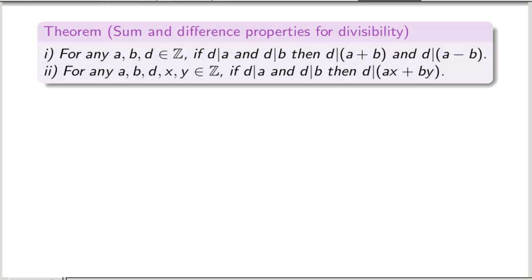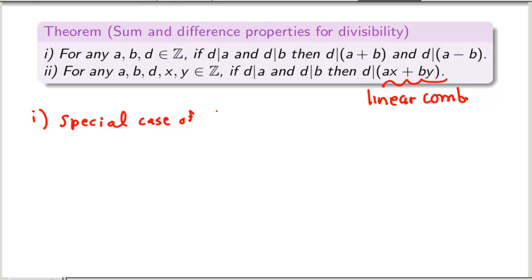Some basic properties of divisibility. The first one is that if d is a common factor of both a and b, then it's a factor of their sum and difference. And this can be generalized to say that d is in fact a divisor of any linear combination of a and b. You'll note that the first property is just a special case of the second — you just let x be 1 and y be 1 for the sum, or x be 1 and y be negative 1 for the difference. So let's focus our proof on the general linear combination property.